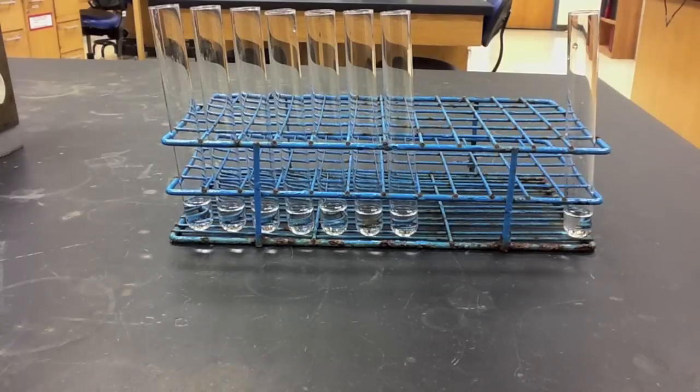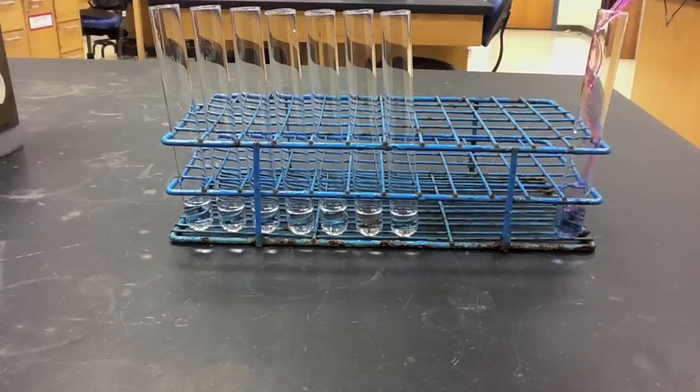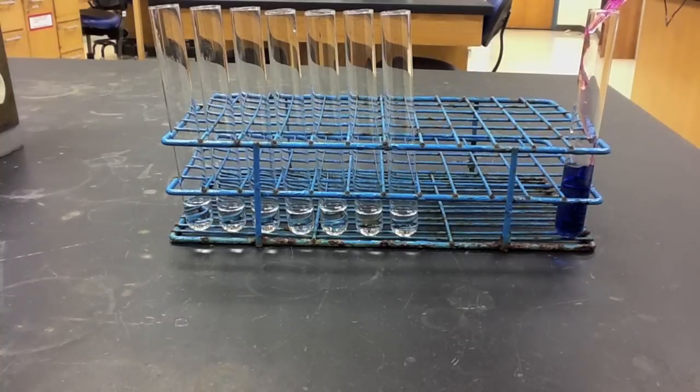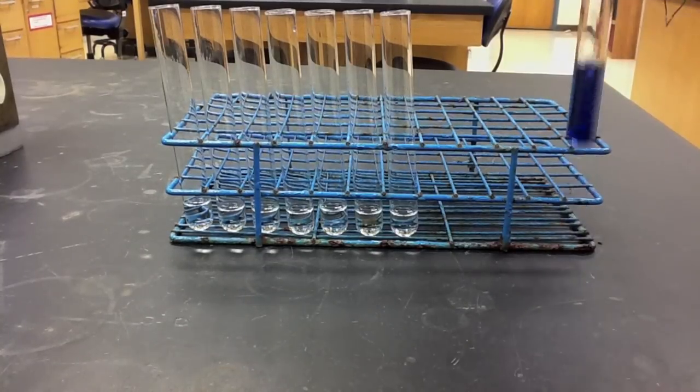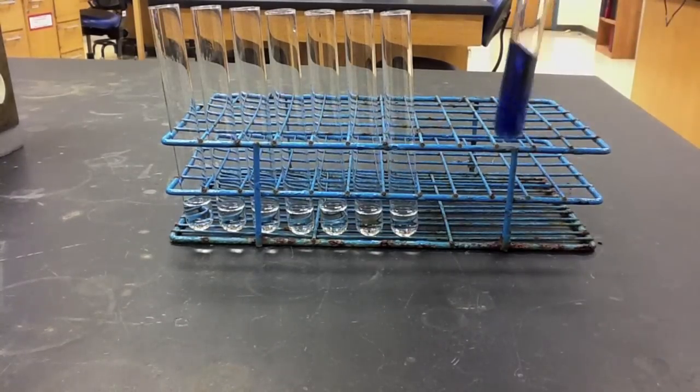I start by adding the anthocyanins to both the unknown sample as well as the seven known buffer samples. As I add the anthocyanins, I see a distinct color change in the solution, and this directly correlates to the pH of that particular solution.